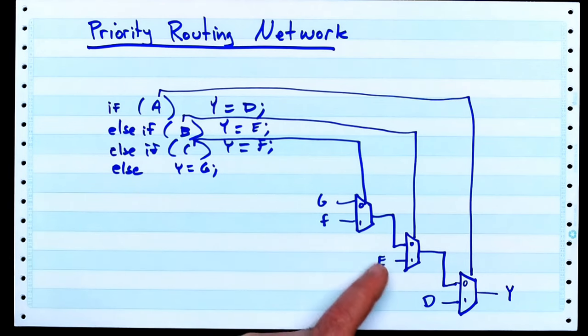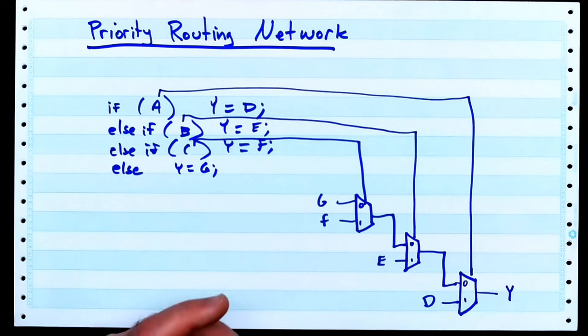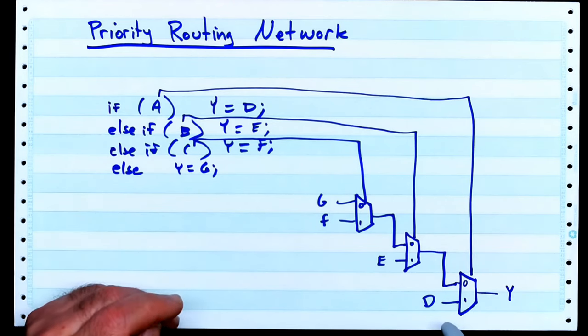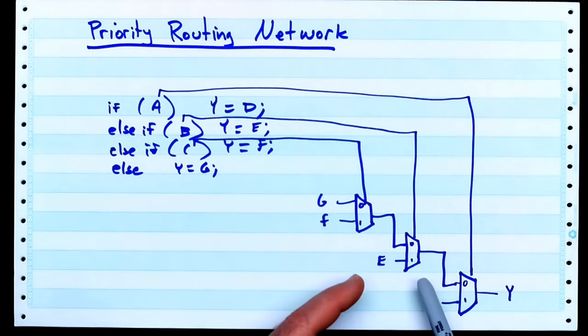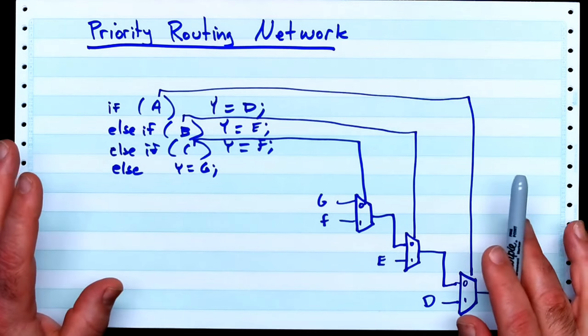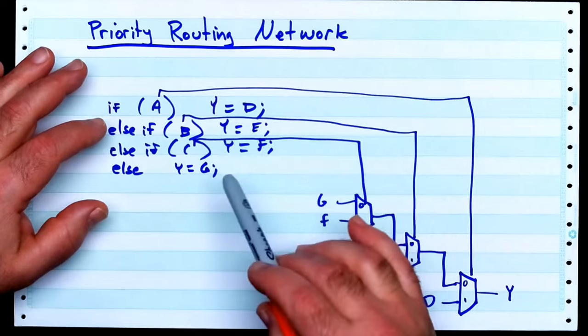Because that worst case propagation delay is what determines the maximum operating frequency or the lowest latency that your design, your circuit, can perform at. And if it turns out that it's through a priority routing network like this, we need to be able to recognize how these are created and how we can play around with the code to get rid of them if we want to down the road.